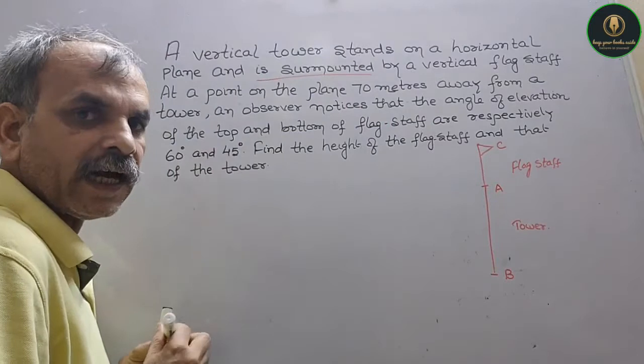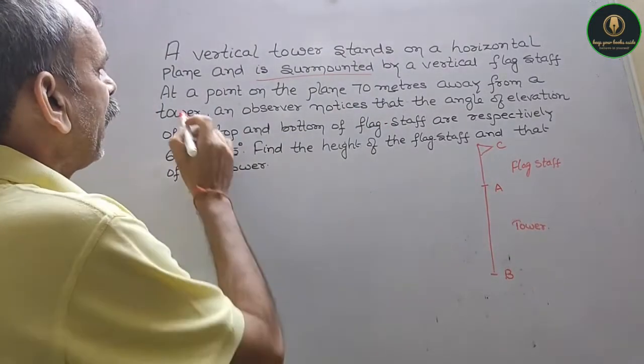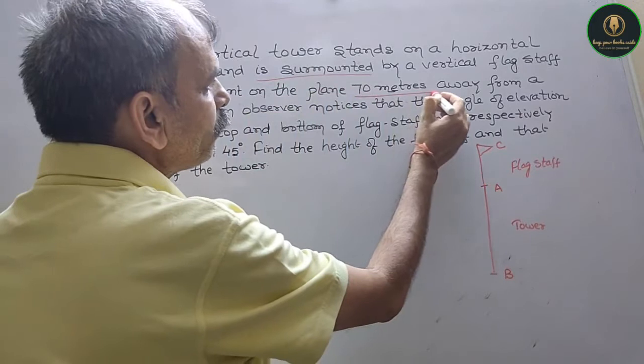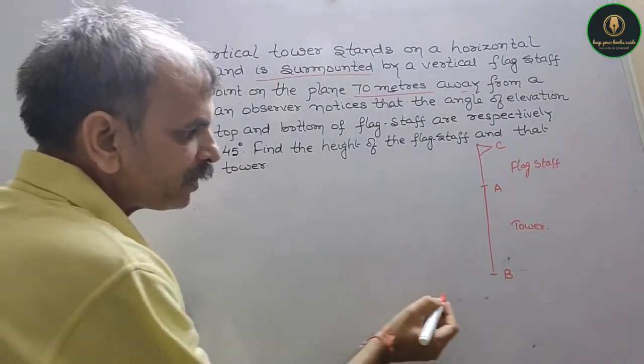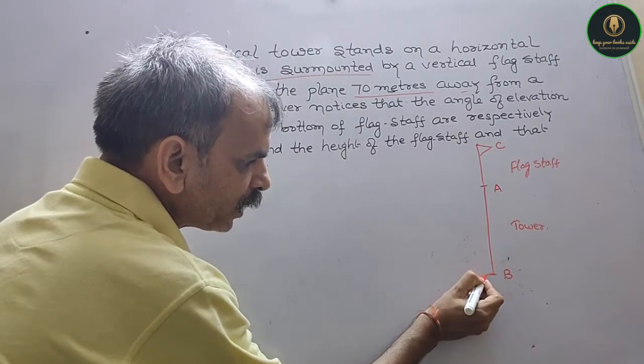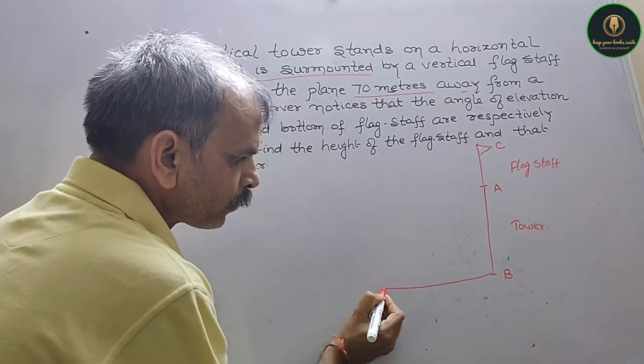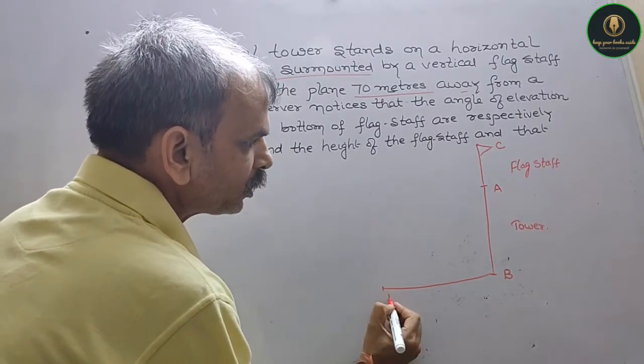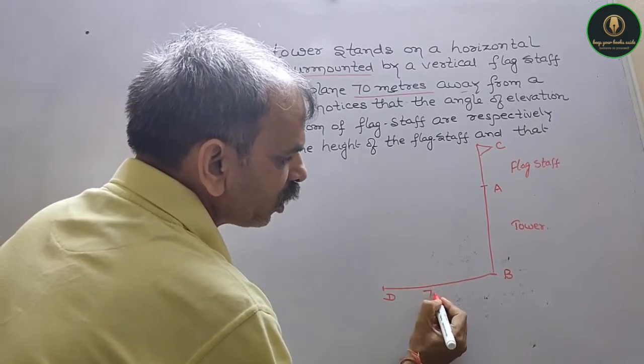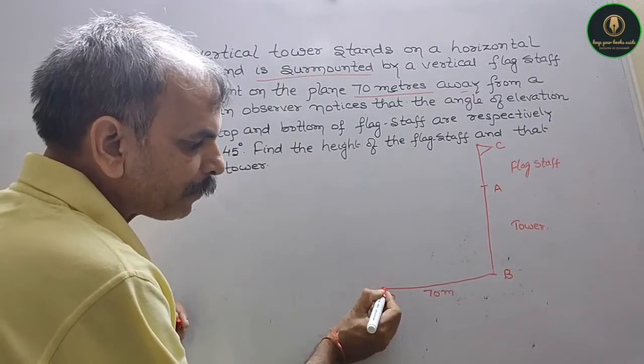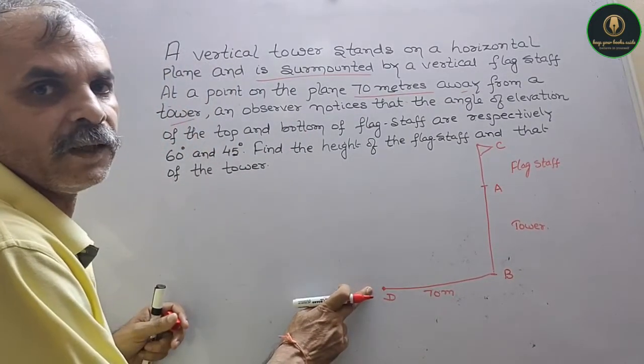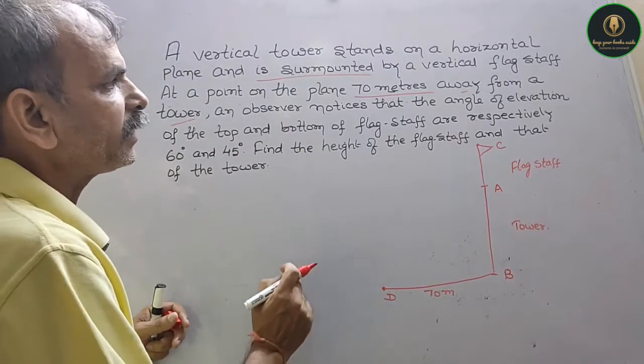Now what does it say? At a point on the plane 70 meters away from the tower, that means 70 meters from here. This point, this point is your D. This is your 70 meters. And the observer is here, you have your observer here.